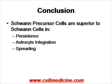In conclusion, Schwann cell precursors are superior to Schwann cells in terms of persistence, astrocyte integration, and spreading. Future questions for clinical implementation include how to generate different types of Schwann cell precursors, whether they can be made in an autologous manner, and whether allogeneic precursors can be used.